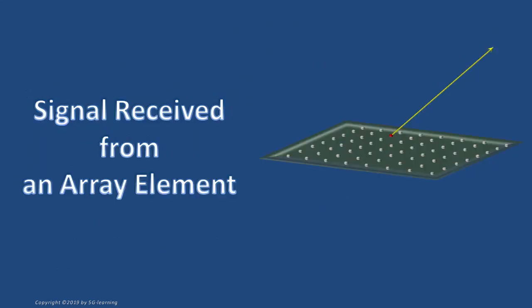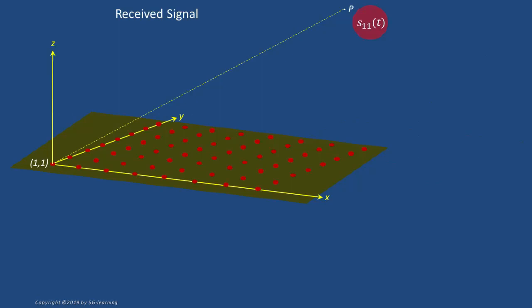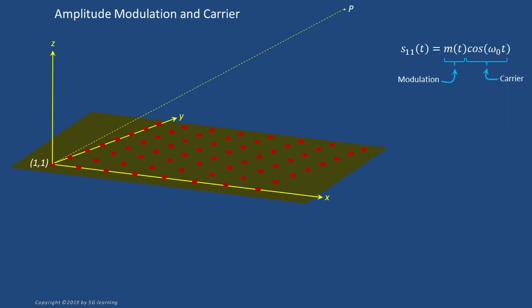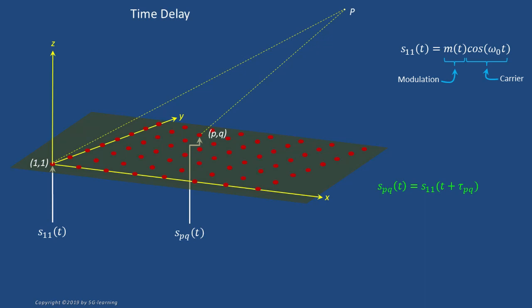Let's call S-11 the signal received at P from a wave originated at element 1-1. In a radio communication system, electromagnetic waves carry messages from the emitter to the receiver. The message may be included in the amplitude M of a sinusoidal waveform oscillating at angular frequency omega-0. Cosine of omega-0 t is called the carrier and M(t) is called the amplitude modulation. Note that messages may also be conveyed in the carrier phase.